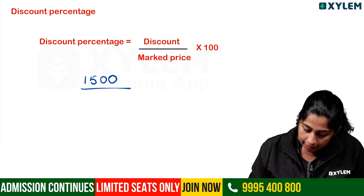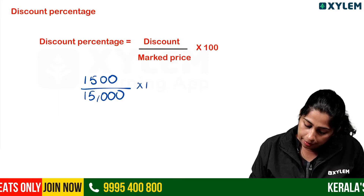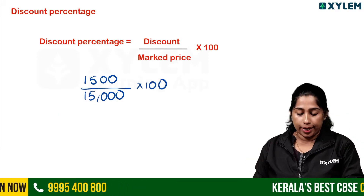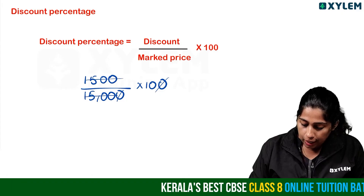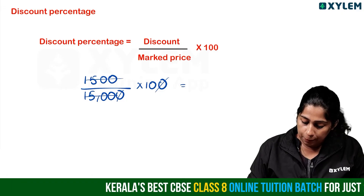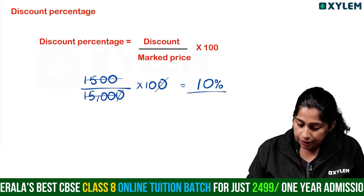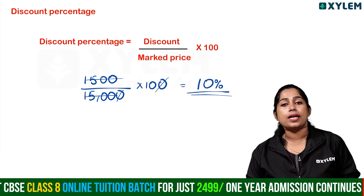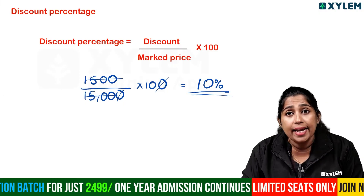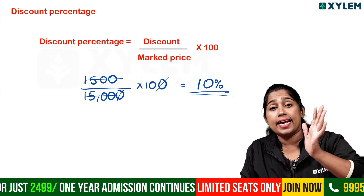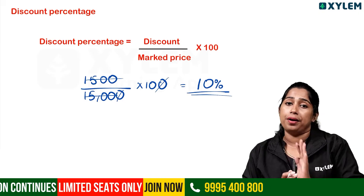The marked price is 15,000. So discount divided by marked price into 100: 1,500 divided by 15,000 into 100. Cancelling the zeros, we get 10 percentage discount. So the discount percentage is 10%.